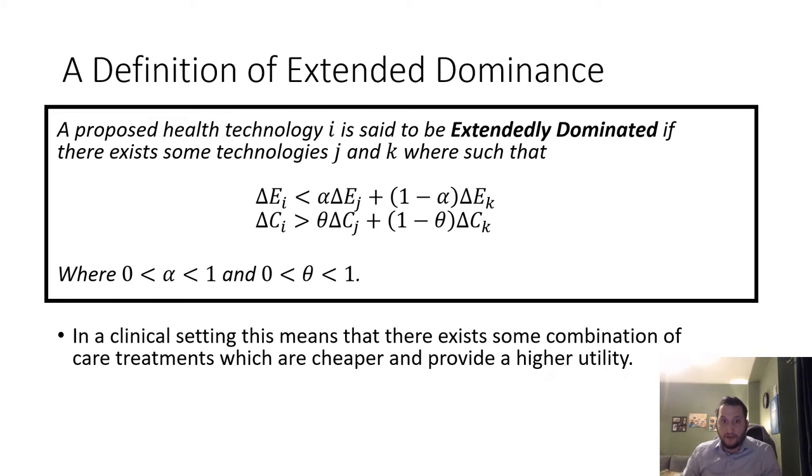The combination of those two will be less than that of choosing I alone. In a clinical setting, this means there exists some combination of care treatments which provide higher utility and lower cost.